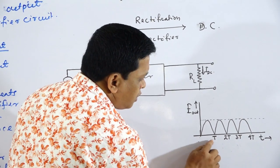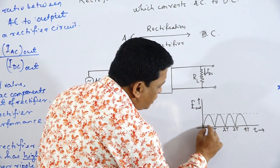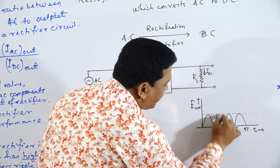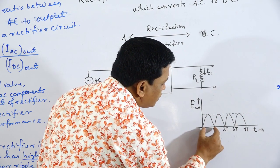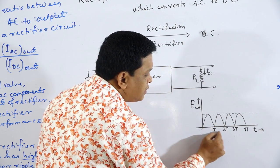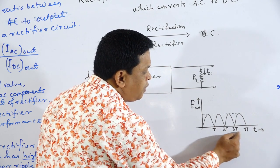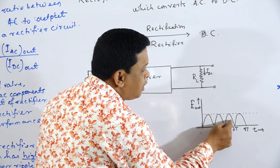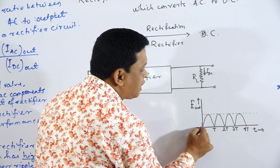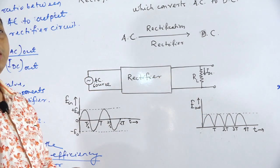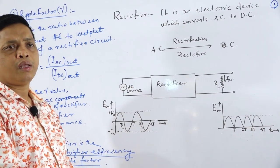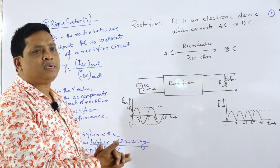This pattern is repeated — this is one cycle because this pattern is repeated again and again. The time taken to complete one cycle is called time period. So in the rectifier circuit, the input is AC and the output is DC.